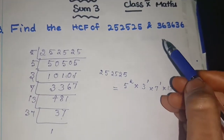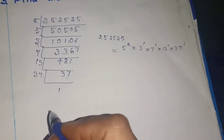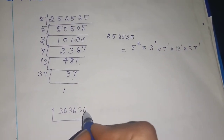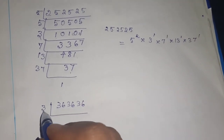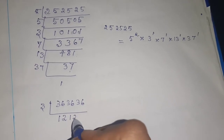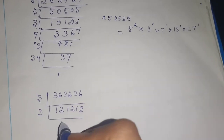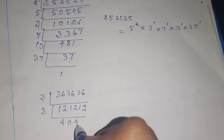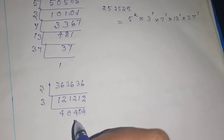Next, we are going to find the prime factors of 363636 using the L-division method. We can go with the 2 table or 3 table - I am going with the 3 table first. 1 three is 3, 2 threes are 6. 1 three is 3, 2 threes are 6. 1 three is 3, 2 threes are 6. Again 3 table: 3 fours are 12, so put 0. 3 fours are 12 - again also 0. 3 fours are 12.